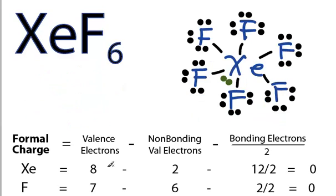So using this equation, we know that xenon has 8 valence electrons from the periodic table. Non-bonding, these 2 right here, there are 2 of them, and then bonding, there's 1, 2, 3, 4, 5, 6. 6 pairs are 12 valence electrons, so 12 divided by 2 is 6. 8 minus 2 minus 6 is 0.